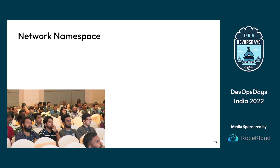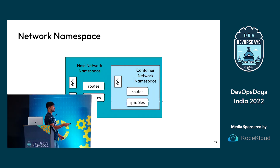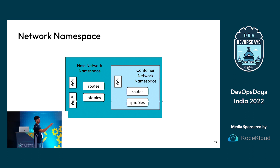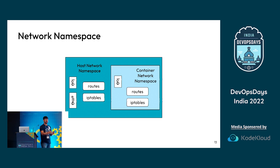Let's take a deeper look into network namespaces. I have my host network namespace and my container network namespace. In the host I have a loopback interface, routes, and IP tables. In the container network namespace we have separate loopback interface, routes, and IP tables. Network namespace mainly deals with isolating the network stack of the host — there will be different routes and different IP table rules in the container namespace, and they will not interfere with the host.